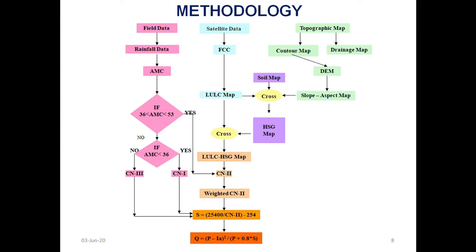Finally, estimation of Q model, that is discharge of runoff of a model, is (P minus Ia) squared by (P plus 0.8S). P is the precipitation and initial abstractions divided by P precipitation plus 0.8 times of surface retention. Finally, we will get the runoff of a model.